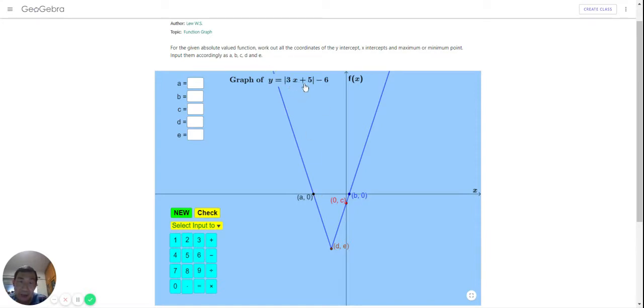Absolute value of 3x plus 5 minus 6 equals 0, because at the x-axis, the y-coordinates are 0. So therefore, 3x plus 5, absolute value of that should be equal to 6.